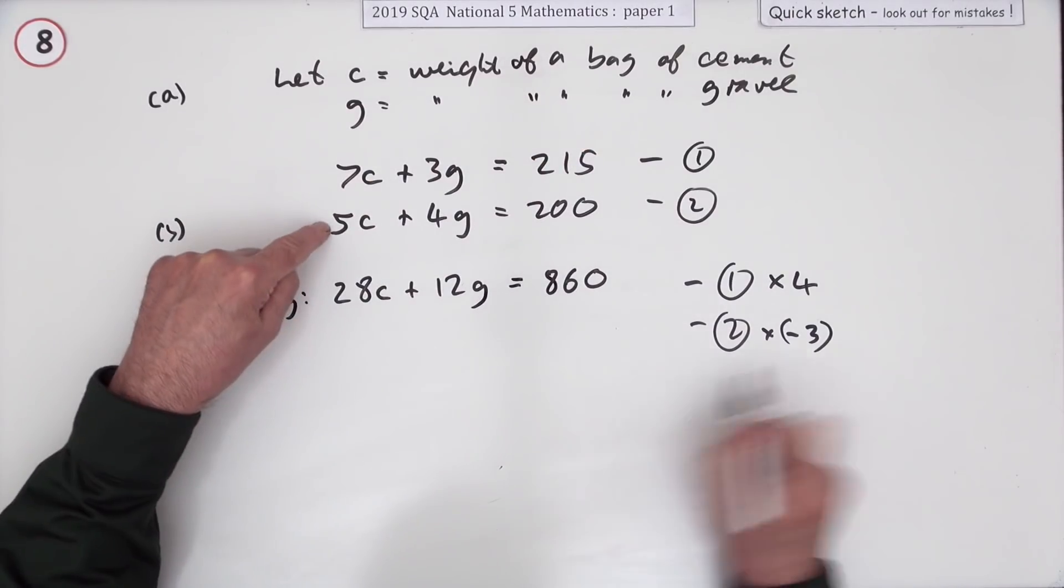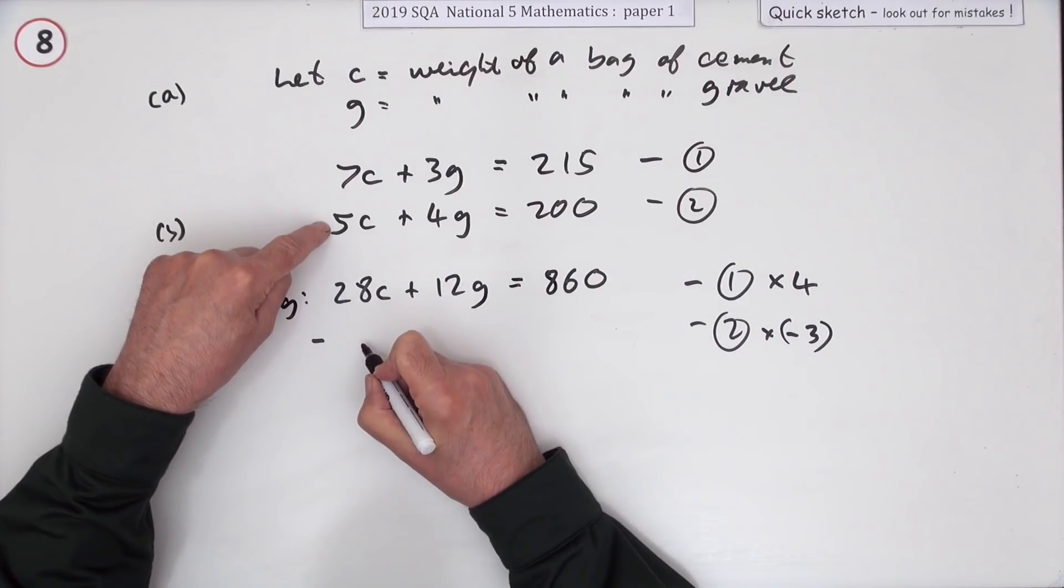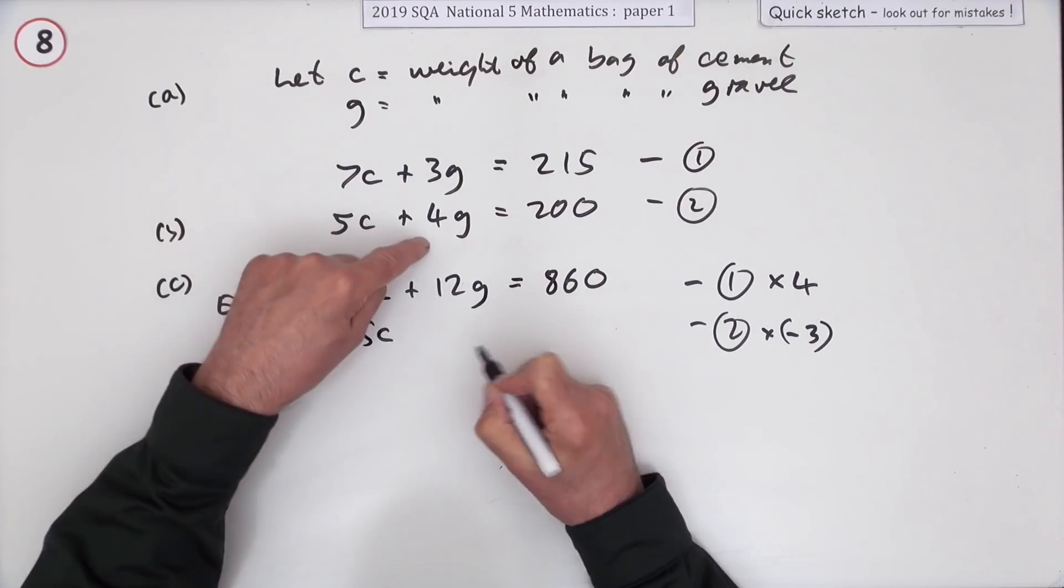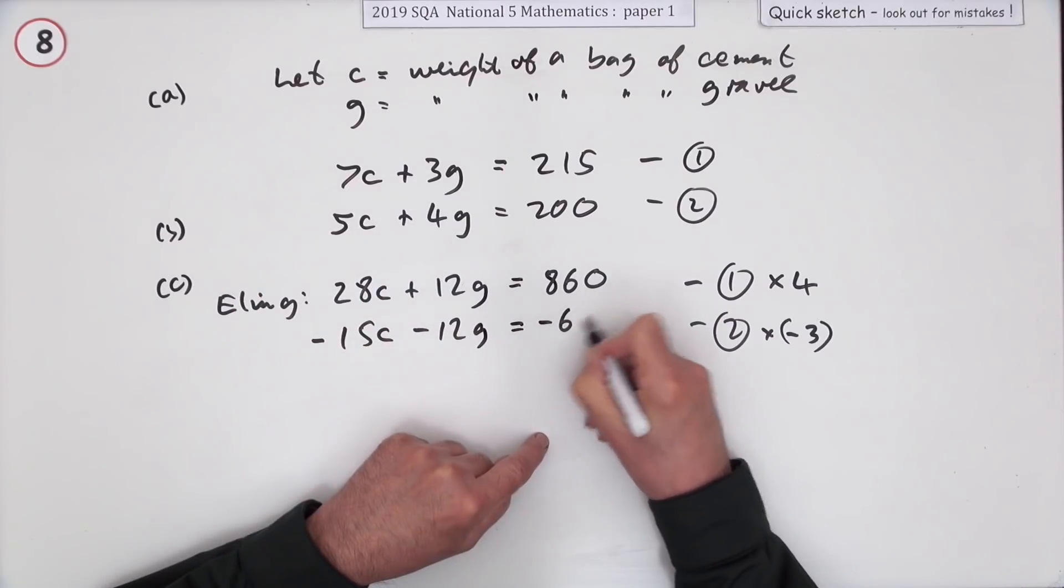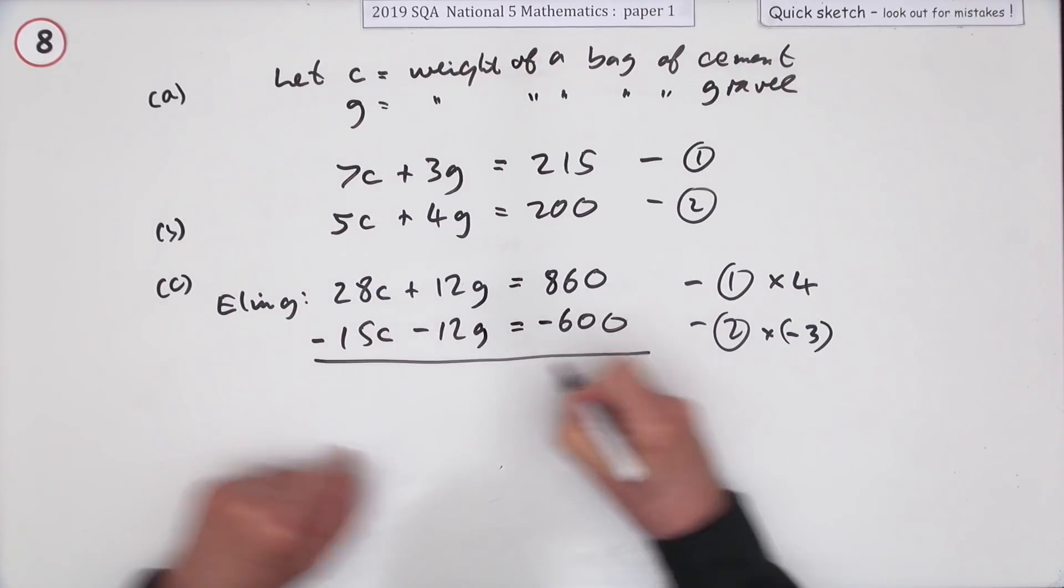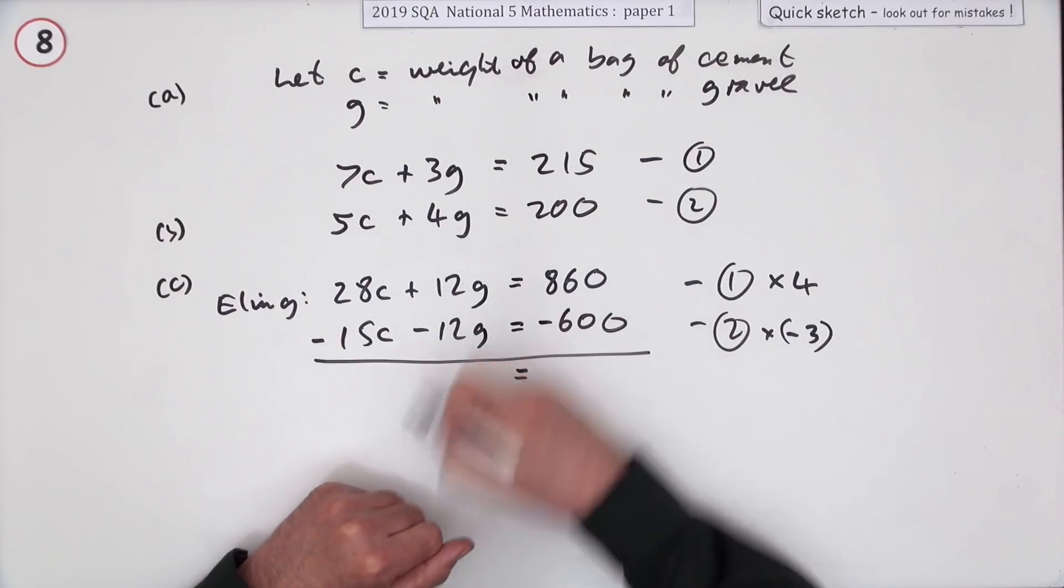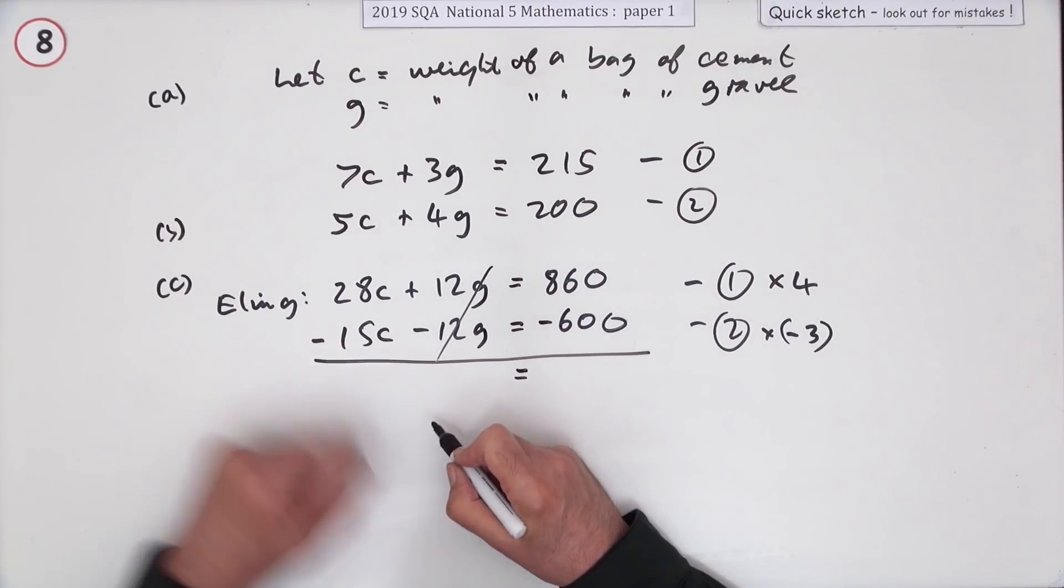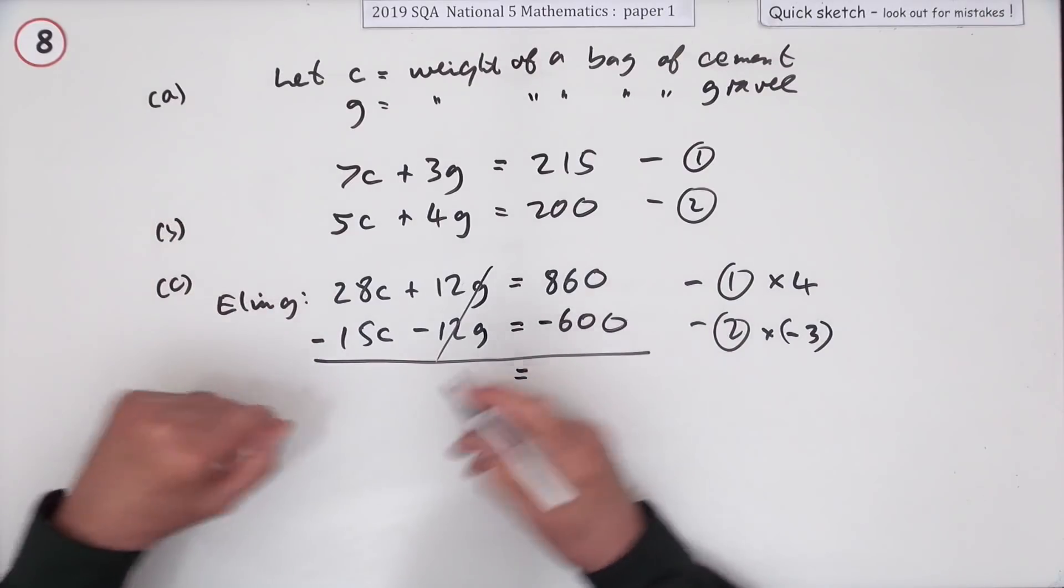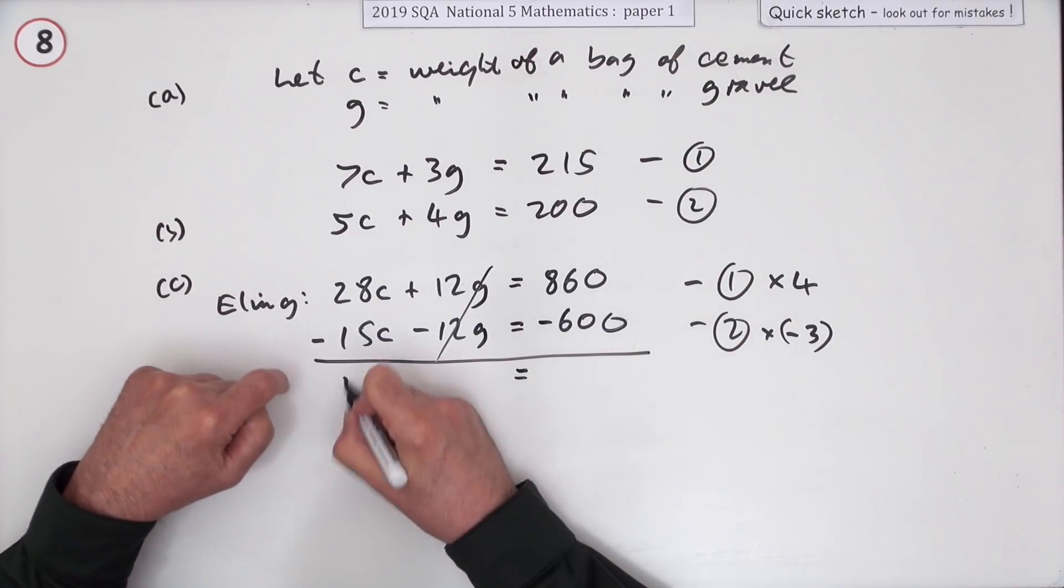Three of them but negative three of them, so it's -15C -12G -600. If you don't like the negatives you can just multiply and then subtract. I'm just going to add now so they disappear - that was the whole point.